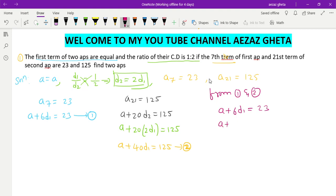equals 23 and a + 40d1 equals 125. Subtracting these equations: -34d1 = -102. Canceling the negative signs, d1 = 102/34, so d1 = 3.